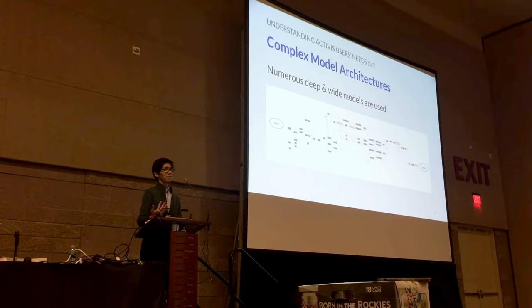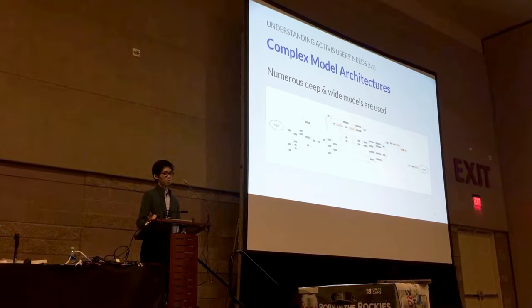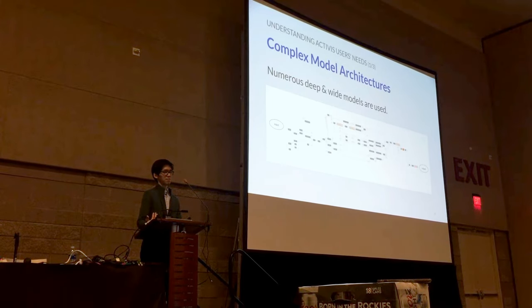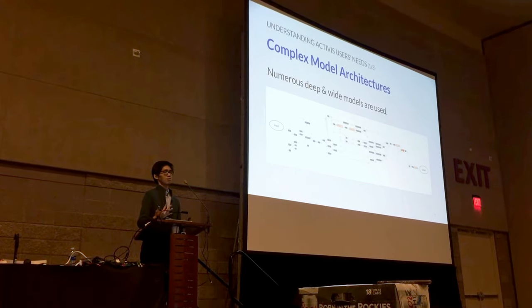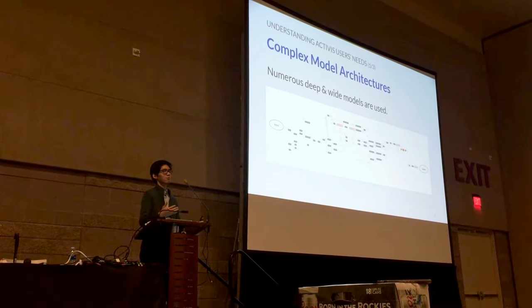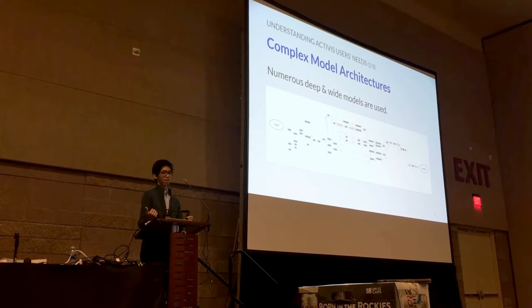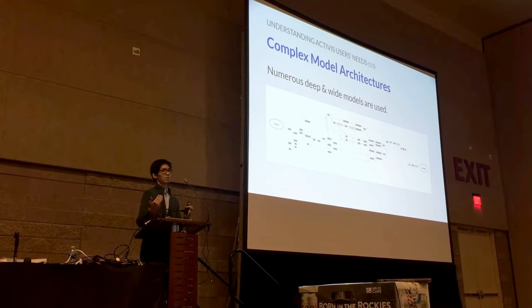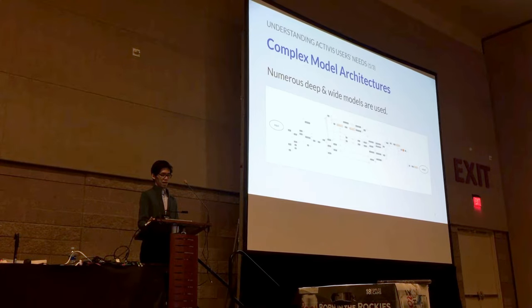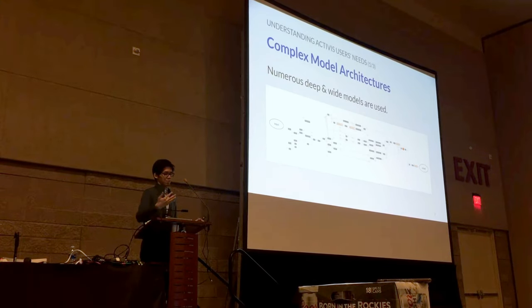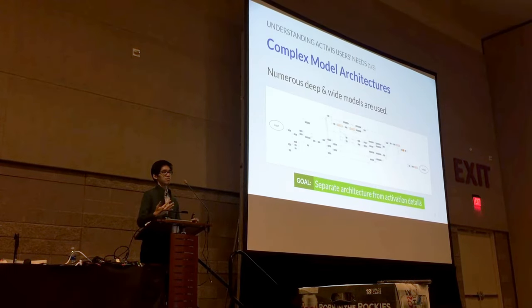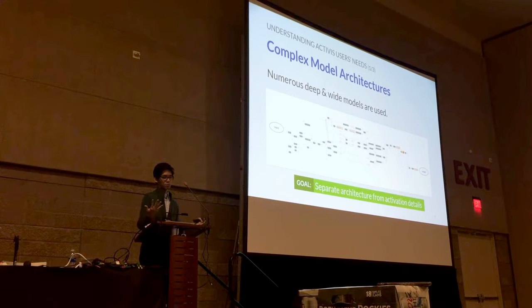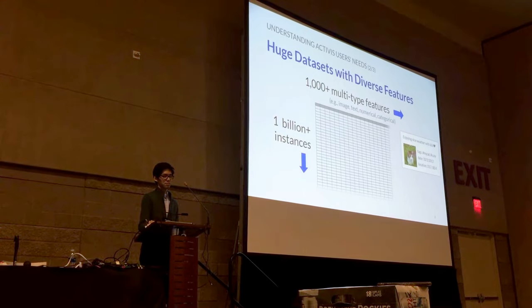First, there are many different types of deep learning models used by Facebook, and all are very complex. While many existing activation visualization tools assume a simple sequence of convolution and max pooling layers, in reality models are usually represented as a graph. There are also many operations — hundreds of operations and hundreds of thousands of neurons. So if we show all activations on one screen, they may not fit. We want to separate model architecture from activation details so users can start with an overview and drill into details.